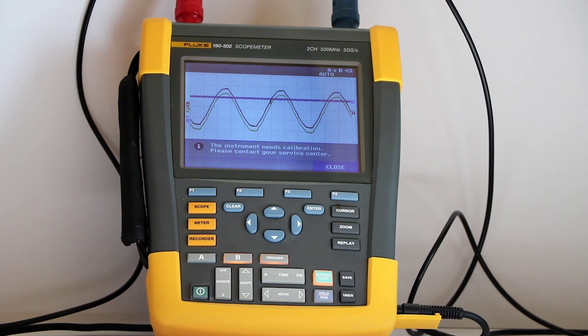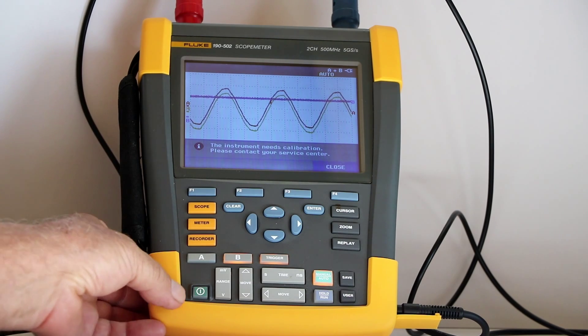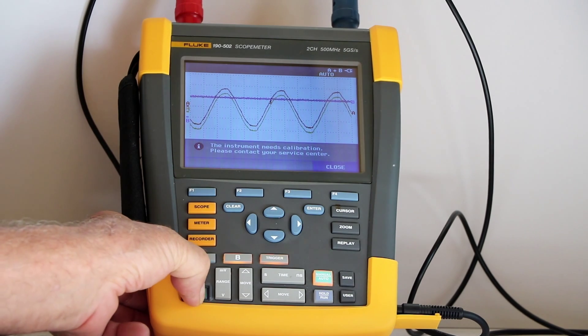To begin the current exercise, we'll default the machine. This is always a good preliminary operation before beginning a new project. To restore factory settings, first turn the oscilloscope off by pressing the power button.